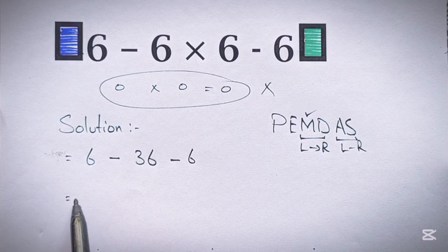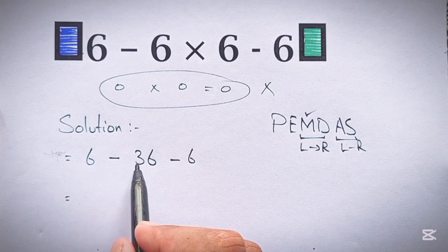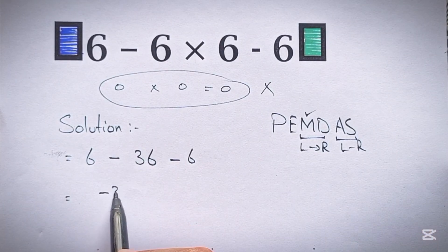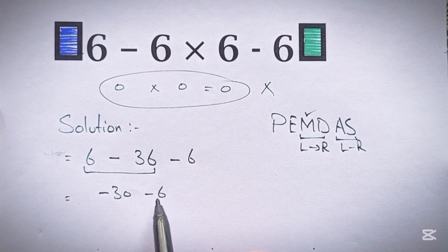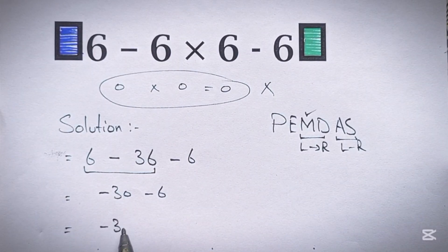Here we work from left to right. 6 minus 36 gives us negative 30, and negative 30 minus 6 gives us negative 36.